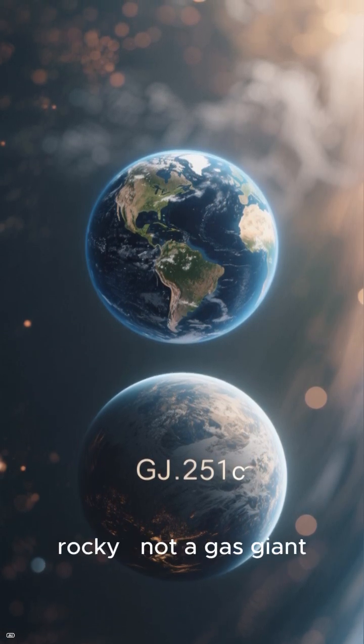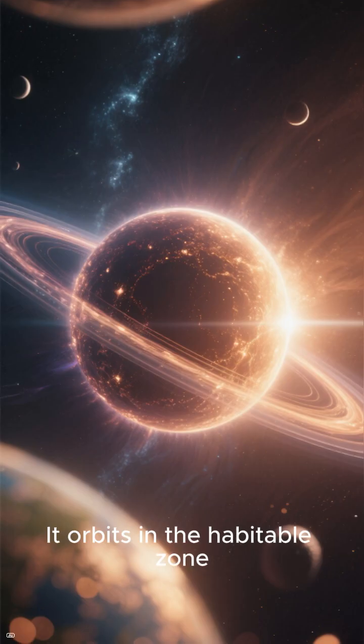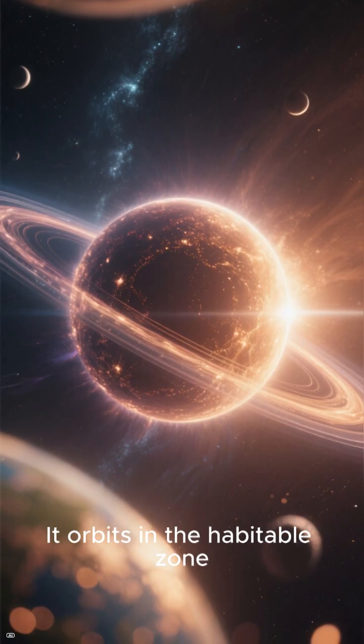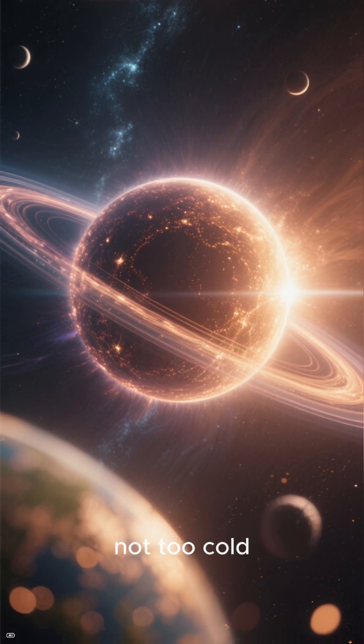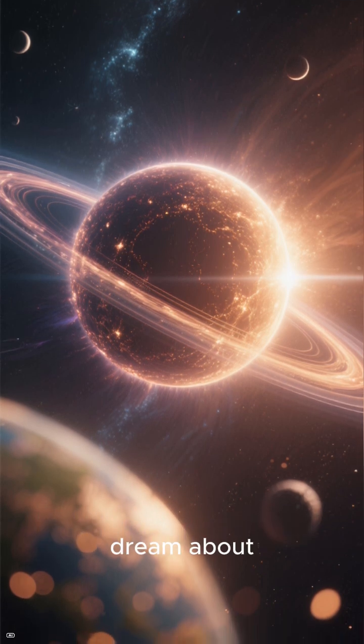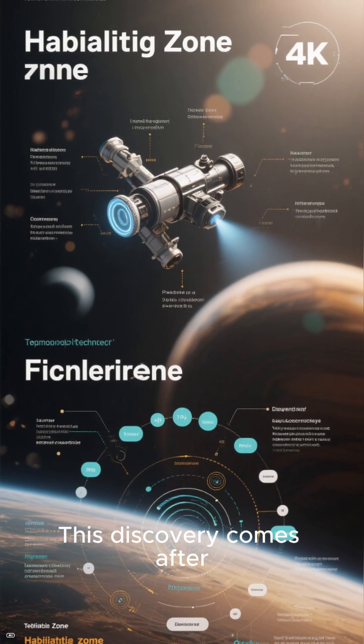It's probably rocky, not a gas giant, and orbits in the habitable zone—the Goldilocks region where it's not too hot and not too cold. Exactly the kind of place astronomers dream about.